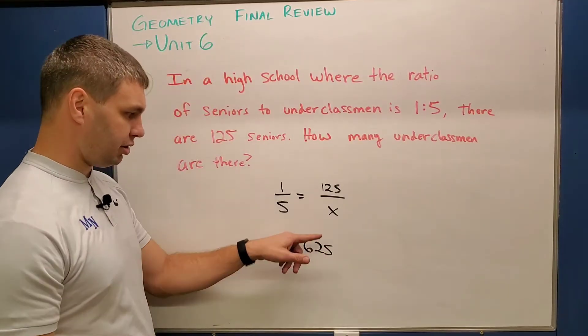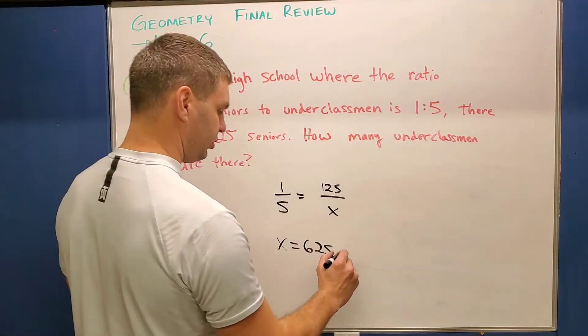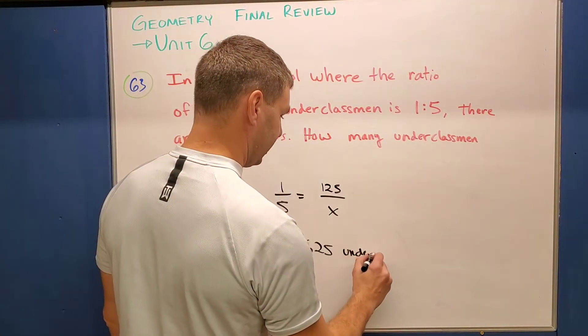So there, right there is our answer. There's nothing with this x where you don't need to divide or anything like that. We can just say 625 underclassmen.